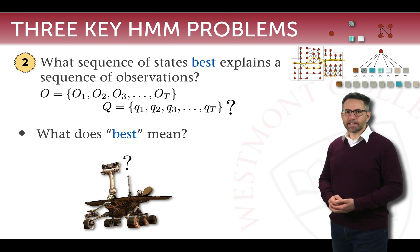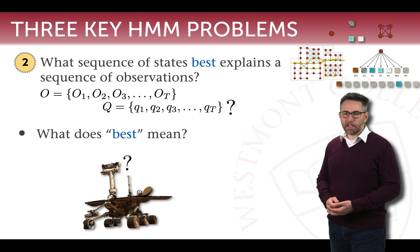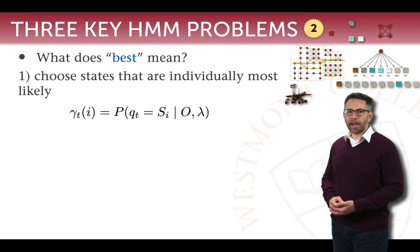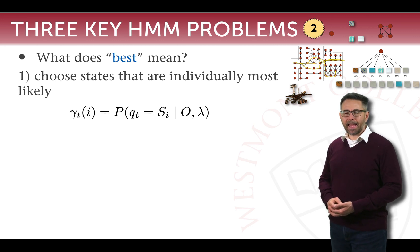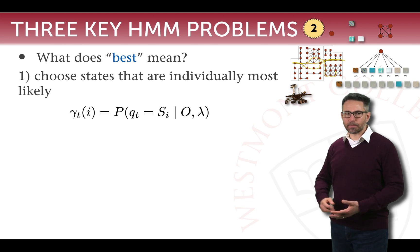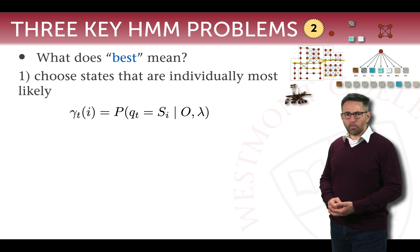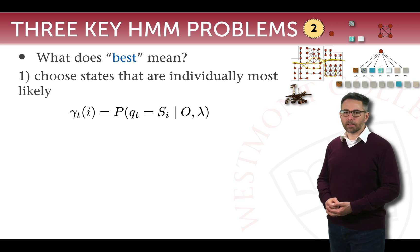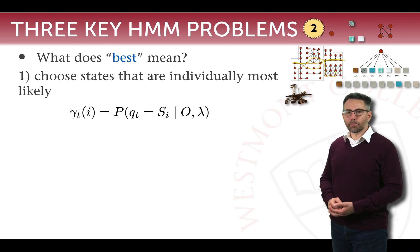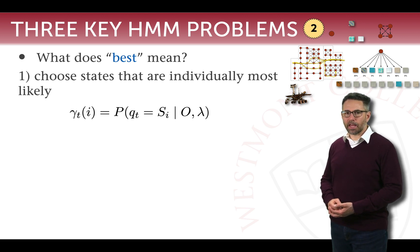This begs the question of what exactly does 'best' mean. One way we could answer 'best' is to ask: what is the most likely state that the robot could be in at any given time t, given our observations and our model? To answer this question, we can introduce a new variable called gamma. Gamma_t_i is the probability that we are in state i at time qt given our observations and our lambda.